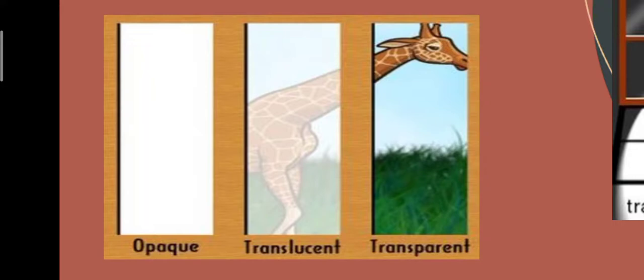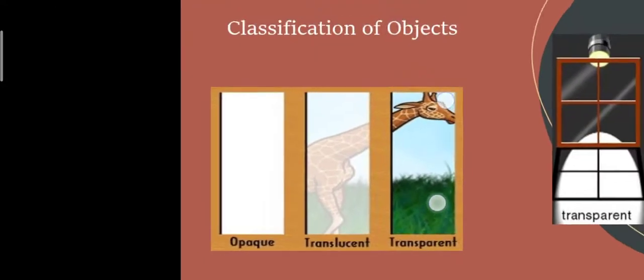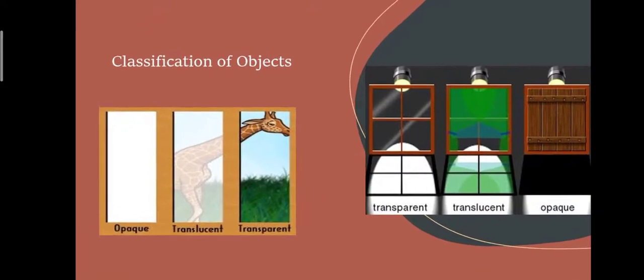Transparent objects, like clear glass, allow light to pass through fully. In the figure, the first window is transparent, the second window is translucent, and the third window, which is wood, does not allow light to pass — it is dark, and such objects are called opaque objects.